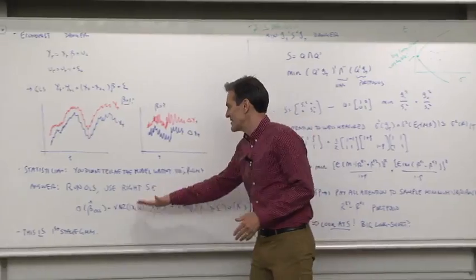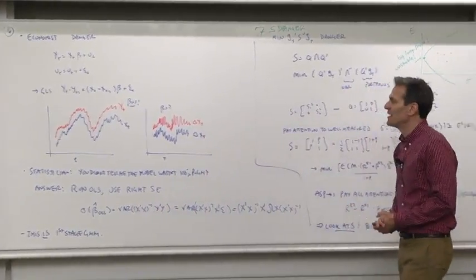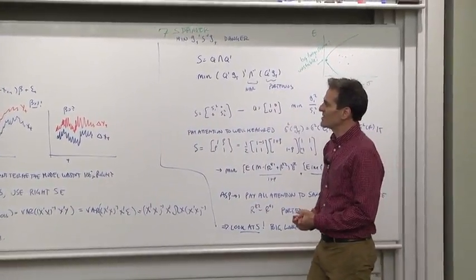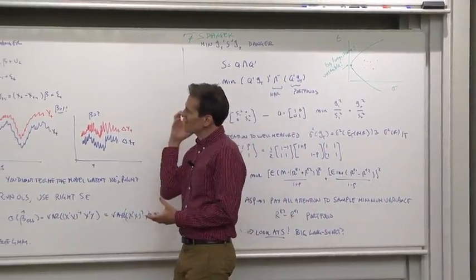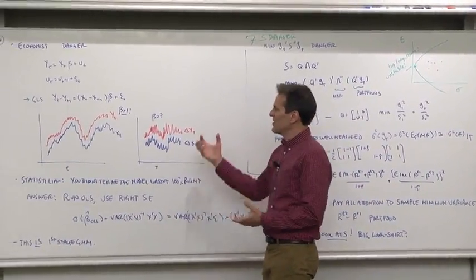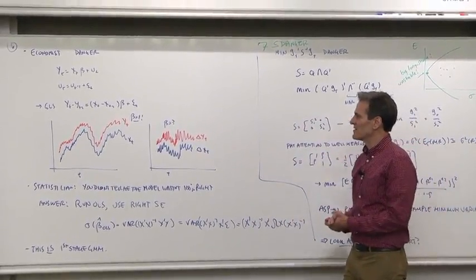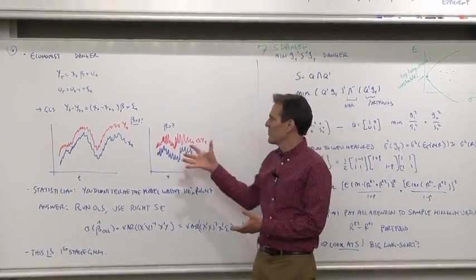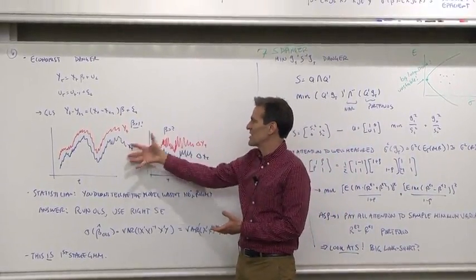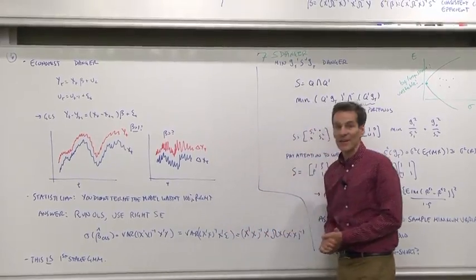So bottom line, this is the same as first stage GMM. A lot of work is going towards robust, thoughtful choices of the A matrix rather than efficient. If you're going to do efficient, it's statistically a good thing, but make sure that the efficiency transformations don't throw out the baby along with the bathwater.